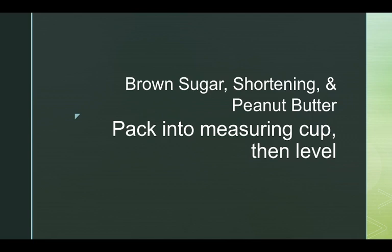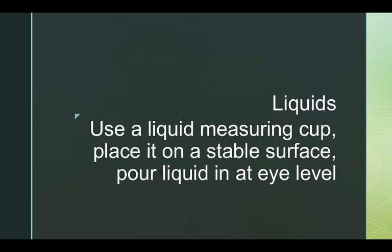Brown sugar, shortening, and peanut butter all gets measured the same way. We want to pack it into our measuring cup and then level it off. I like to use the back of a spoon for this. Here's the deal. These are all pretty sticky items. Okay, except for brown sugar. So when you measure shortening and peanut butter, I line my measuring cup with a piece of plastic wrap. And that way, it's not as big of an issue to clean up afterwards.